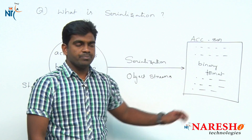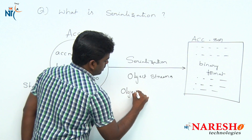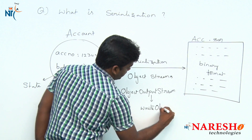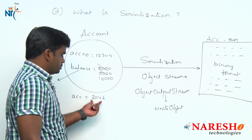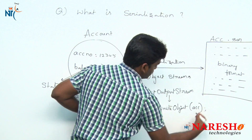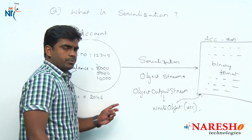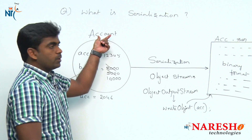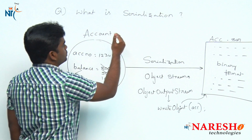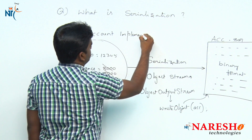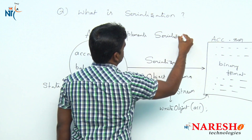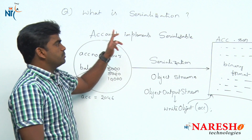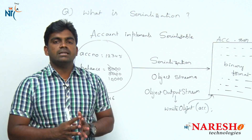First we need to create an object of ObjectOutputStream. In the ObjectOutputStream class there is a method called writeObject(). You pass the reference of the object you want to write as an argument, and it will automatically write it into the file. One important thing: the Account class whose object you want to serialize must implement the Serializable interface — this is mandatory. Whichever class object you want to serialize, that class must implement the Serializable interface.